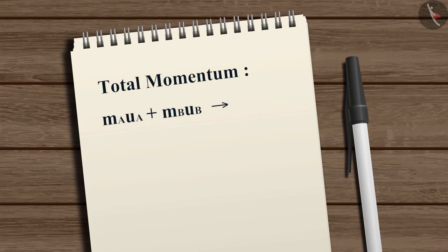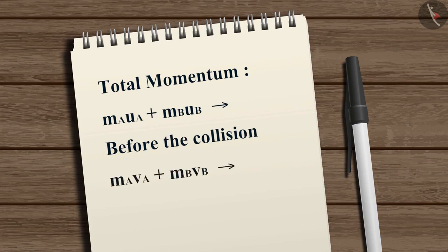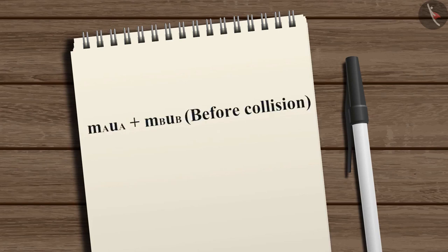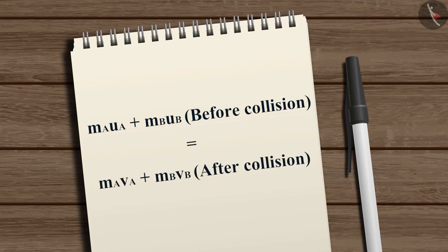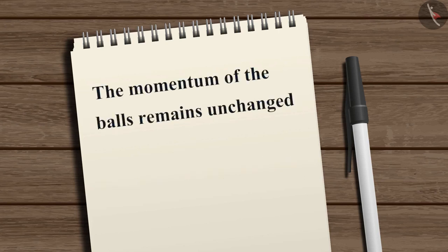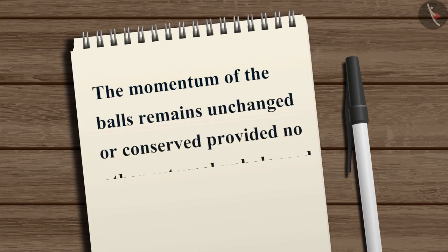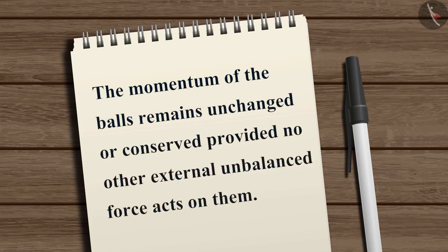Now, MA·UA + MB·UB denotes the momentum of balls A and B before the collision, and MA·VA + MB·VB denotes the momentum of balls A and B after the collision. From the previous equation, we can observe that the momentum of the balls before collision is equal to the momentum of the balls after collision. That is, the momentum of the balls remains unchanged or conserved provided no other external unbalanced force acts on them.